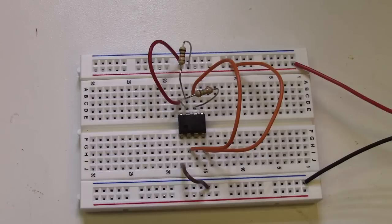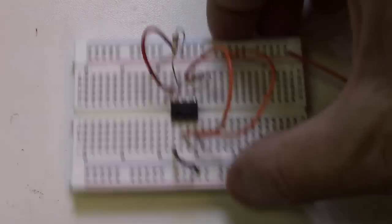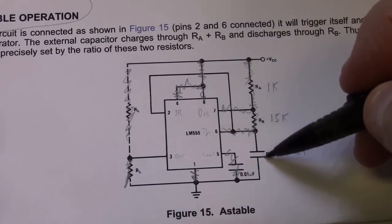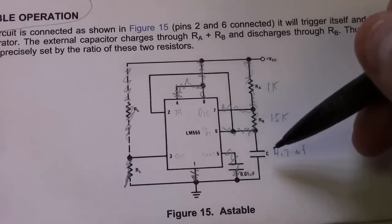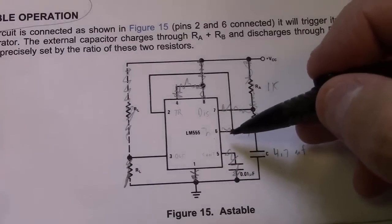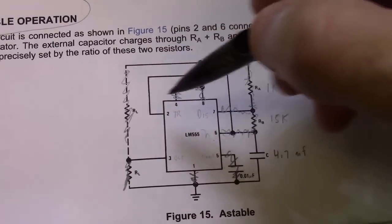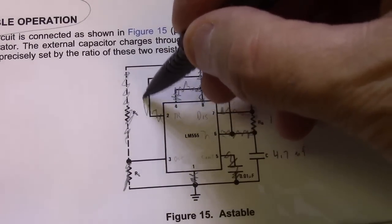The capacitor, according to our schematic here - not this capacitor but the one we're going to use for timing, the 4.7 microfarad capacitor - goes from pin six to ground but also goes from pin two to ground. We've already made this connection here.